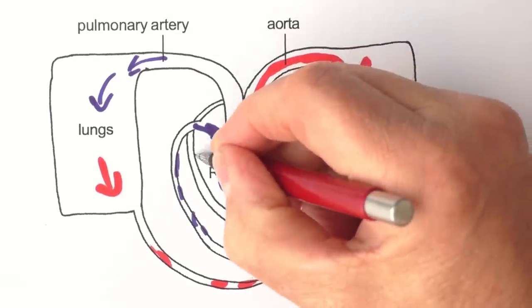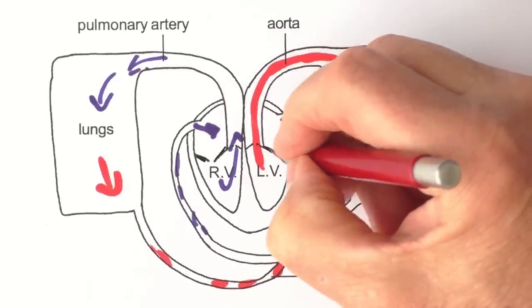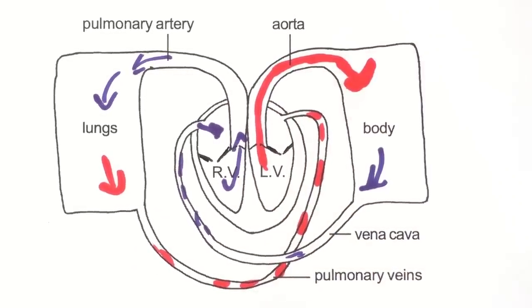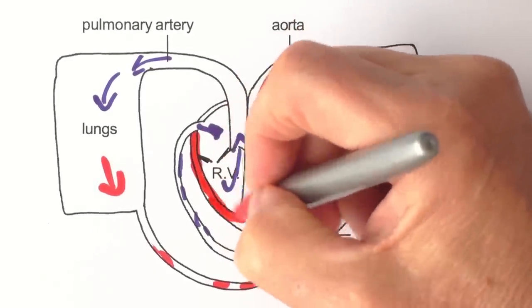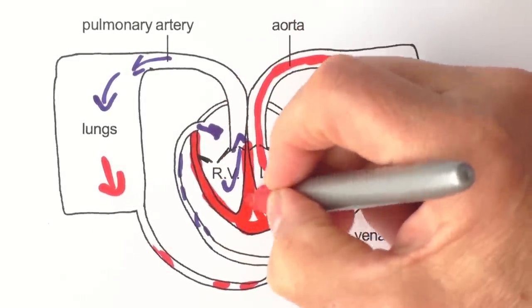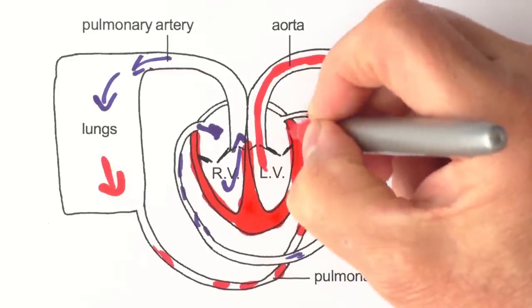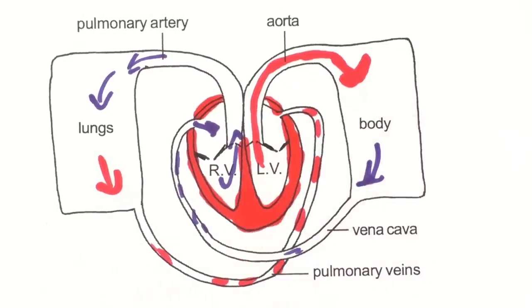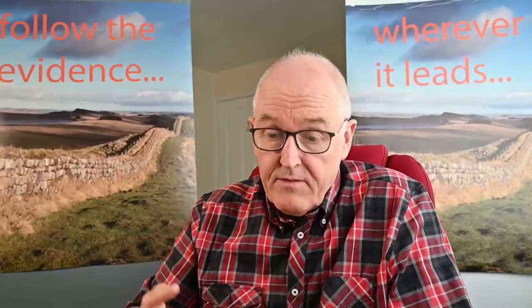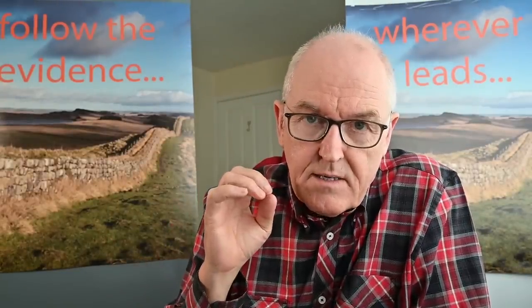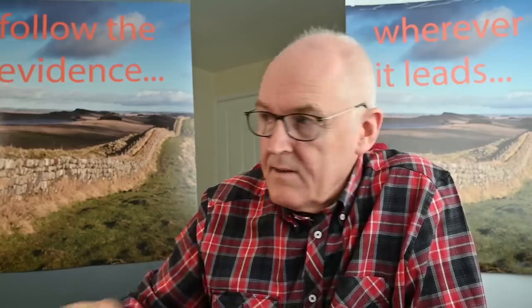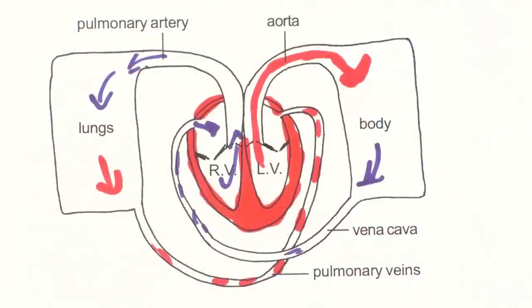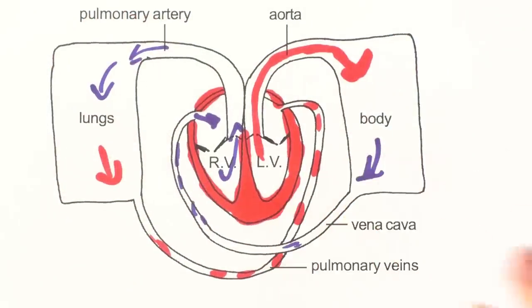Heart failure has two main causes: disease of the heart valves, or disease of the heart muscle — the myocardium. I don't think the excess in heart failure deaths is caused by valvular failure, because doctors can diagnose this easily by listening for whooshes and murmurs. I think this excess of death is caused by disease of the myocardium — myocardial failure.